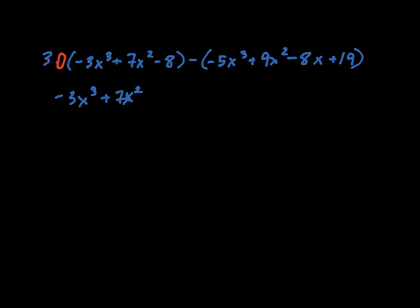It's negative 3x³ plus 7x² minus 8. But over here on this side, we have a negative, negative one. So let's go ahead and distribute that or multiply that negative one into the parenthesis.